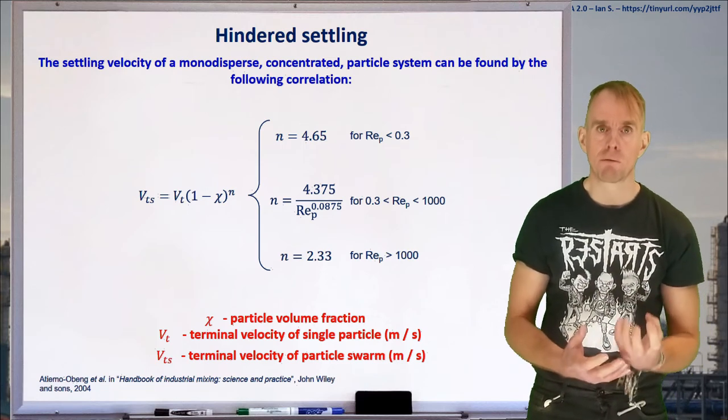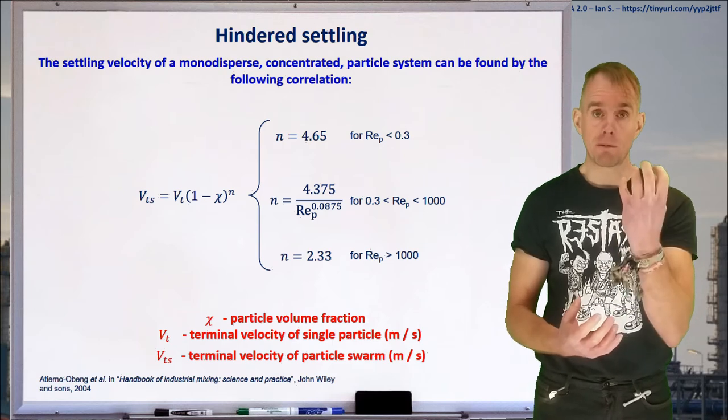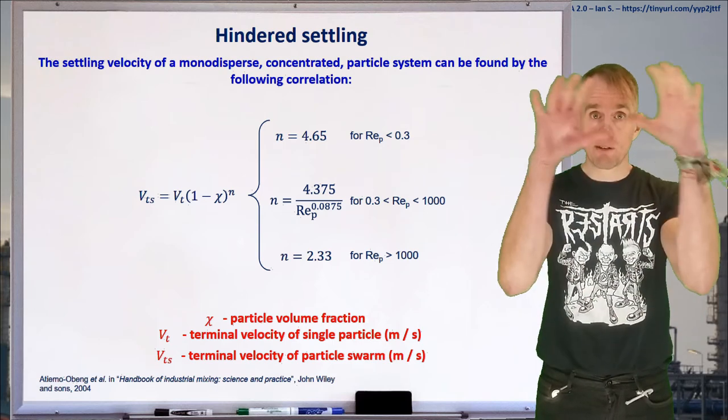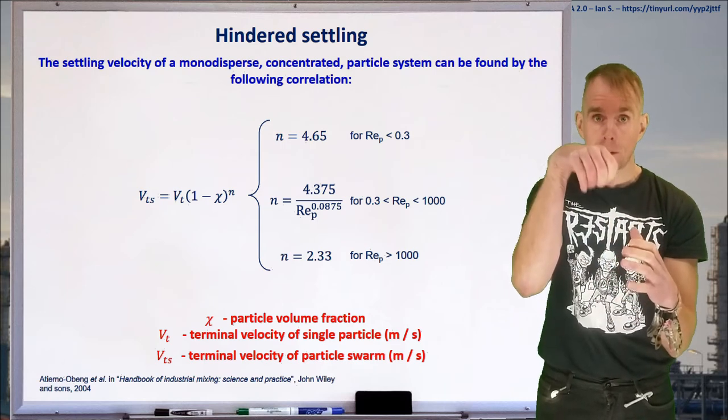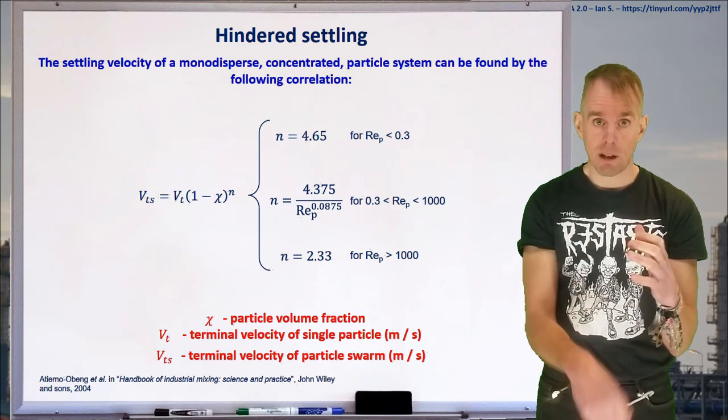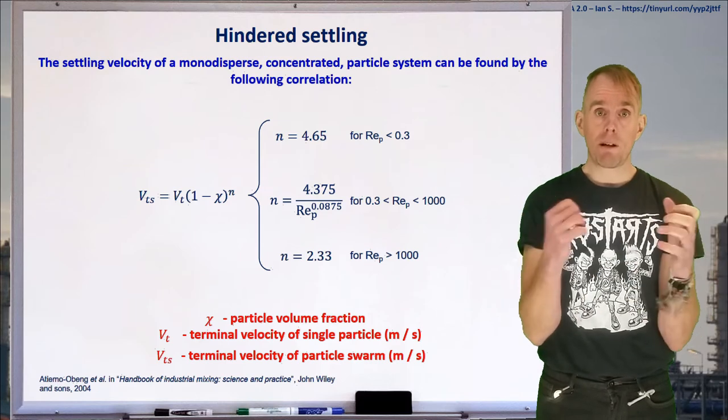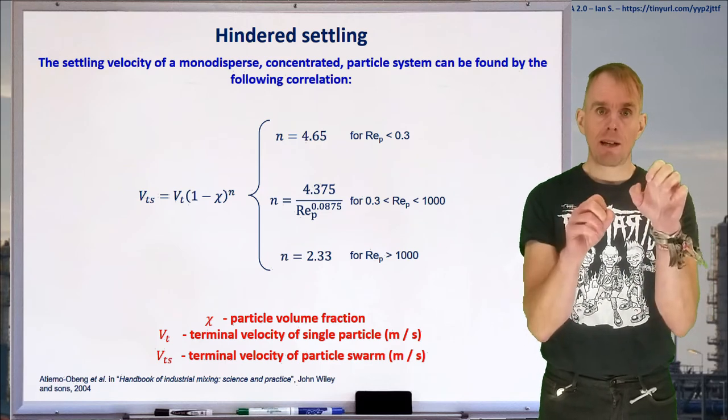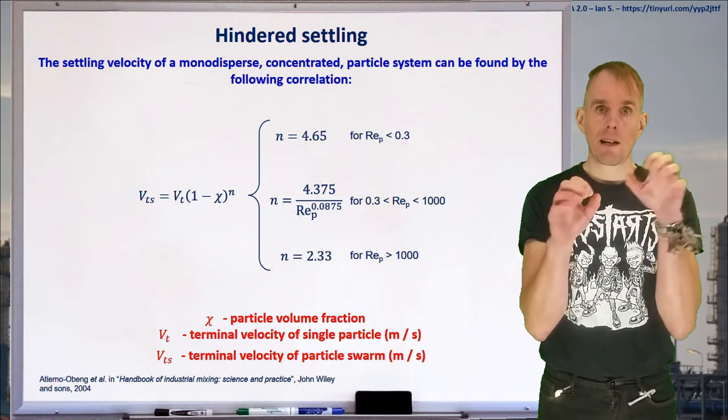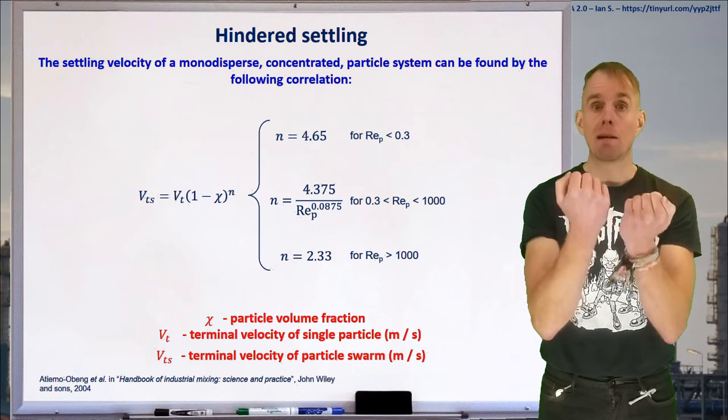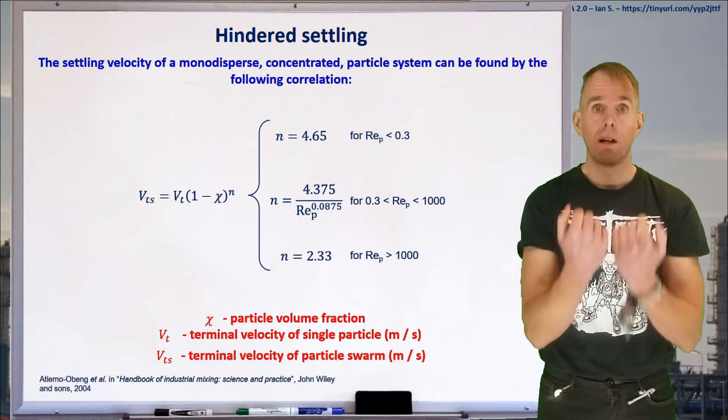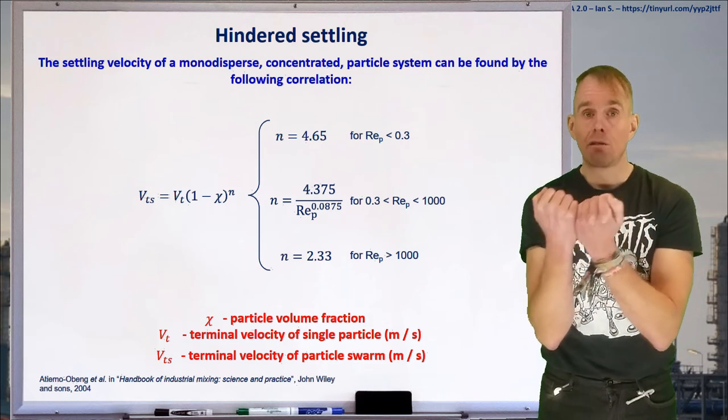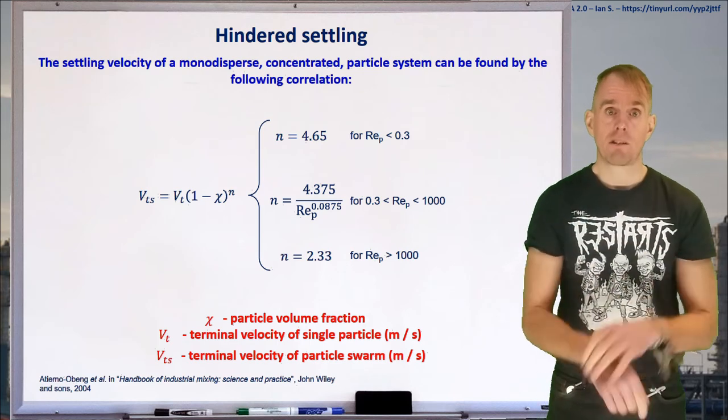So, hindered settling and swarms of bubbles rising have a very similar set of physics underpinning it. If you think about how a bubble rises through a fluid from the standpoint of the fluid, you'll get a velocity field in that fluid caused by the bubble moving through it, much as you will by a particle settling through it. If you've got more than one bubble or more than one particle, especially in close proximity, then you're going to get velocity field overlap in the liquid phase, which slows the whole thing down. And so, many bubbles rising has a direct analogy to many particles settling.